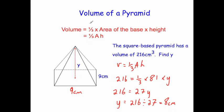The volume of a pyramid is given by the formula one-third times the area of the base times the height, sometimes written as V = 1/3 A h.